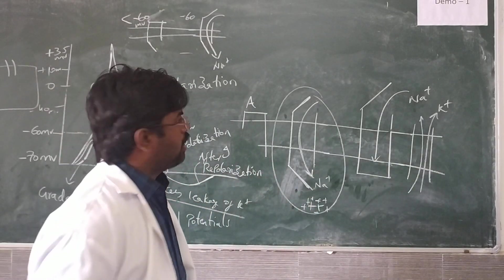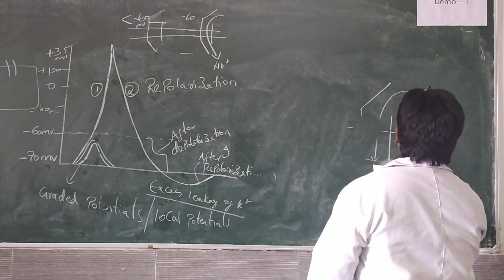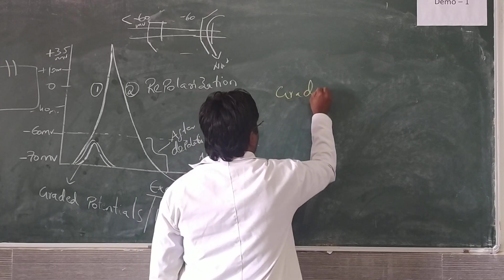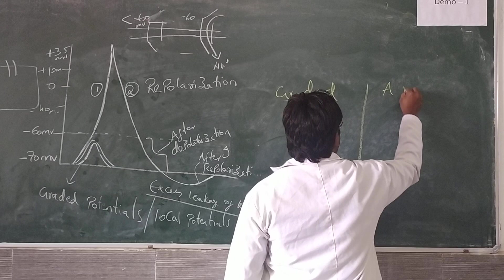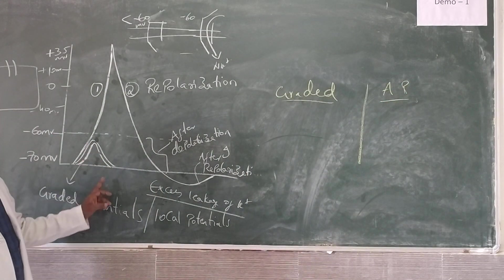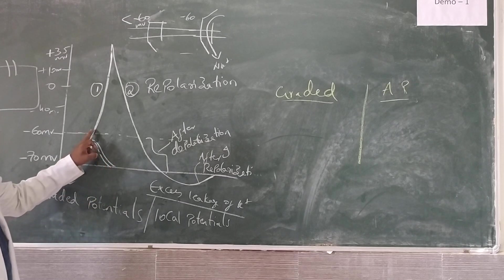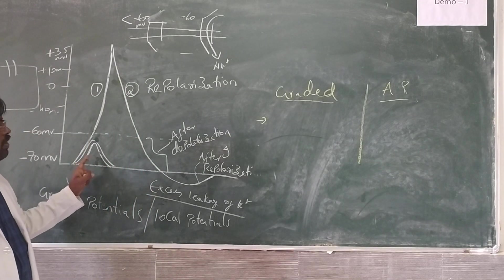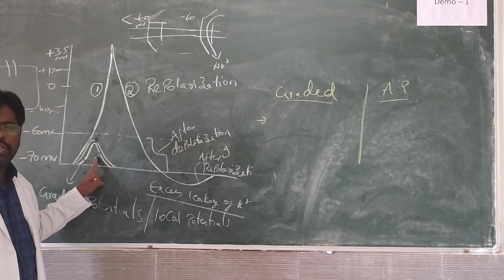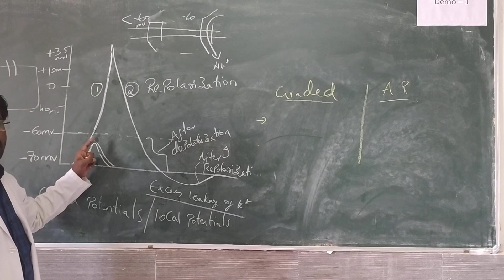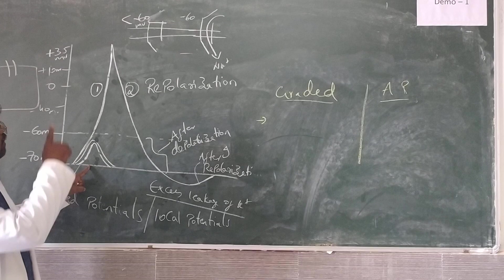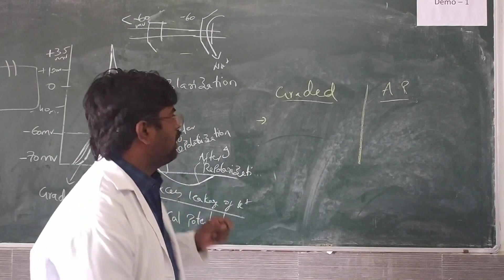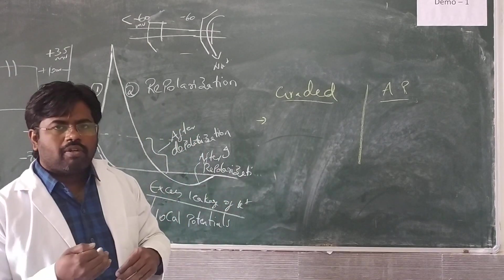The important concept we need to understand is: what are graded potentials and what are action potentials? Graded potentials are graded, and action potential is not graded. Graded potentials never propagate — they initially give some positivity and die off. Whereas action potentials will propagate; they show some action, transferring from one end of the nerve fiber to another end.